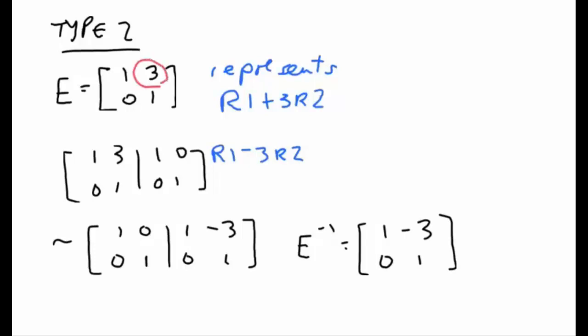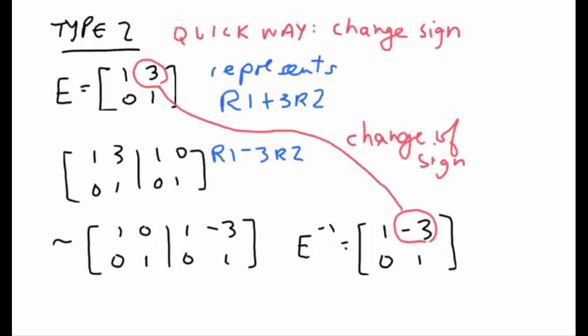So we conclude that E inverse must be equal to 1 minus 3, 0 1. Specifically for type 2 elementary matrices you're going to find that the number that's not on the main diagonal differs by a sign. And that's going to be our quick way to find the inverse of a type 2 elementary matrix. As long as we know that E is type 2 we'll look for the number that's not on the main diagonal and to calculate the inverse we'll switch the sign of that number.